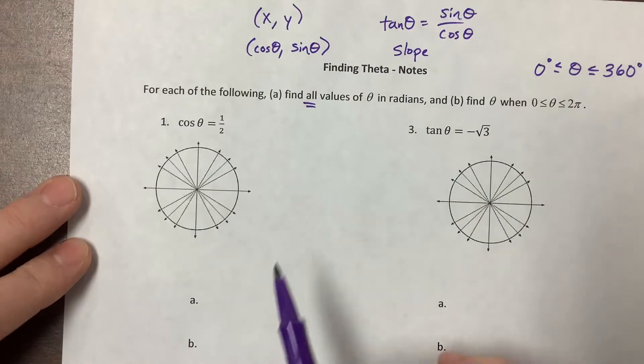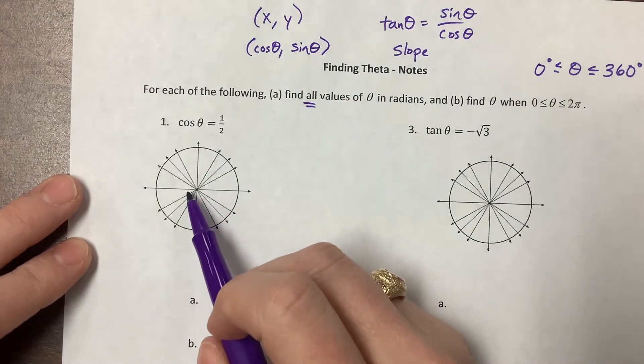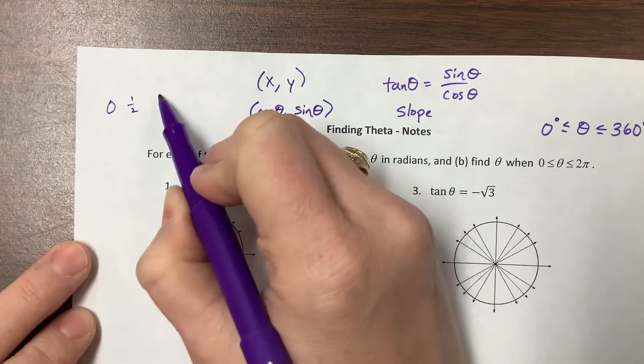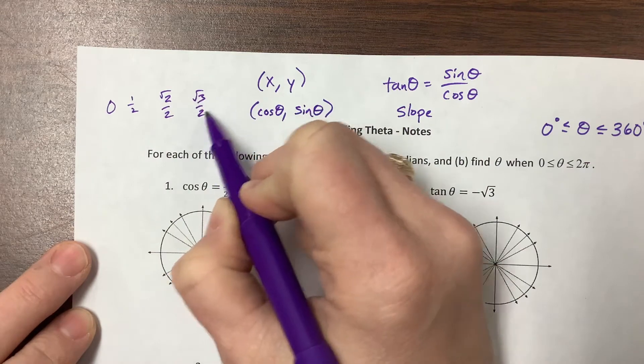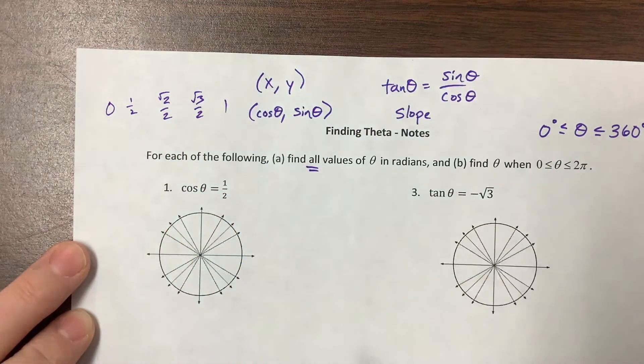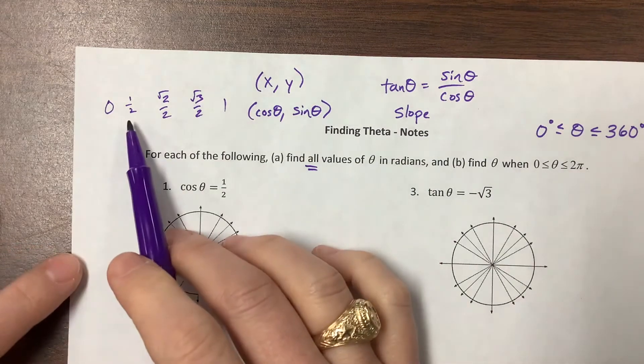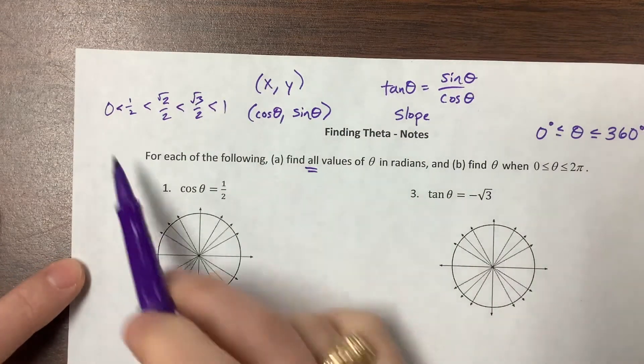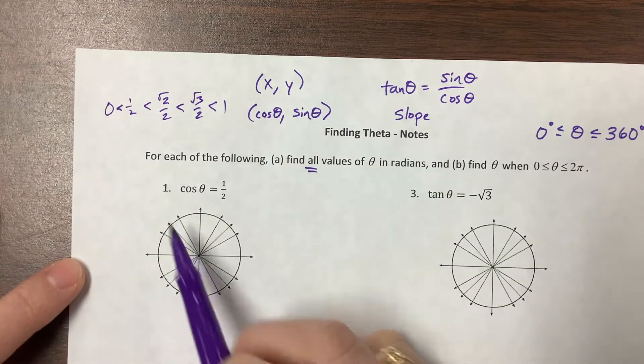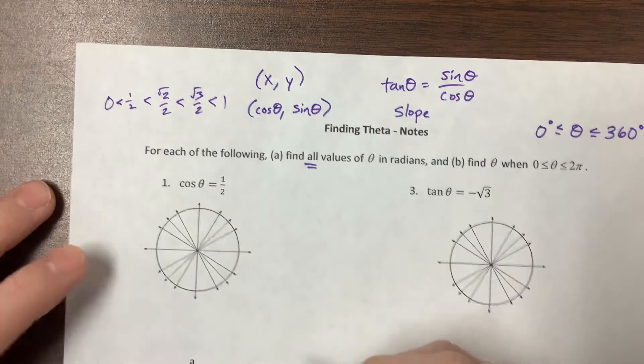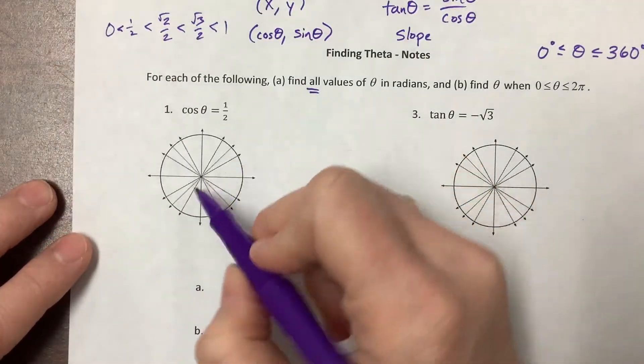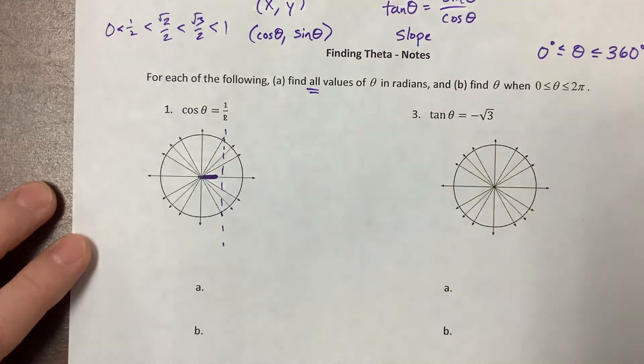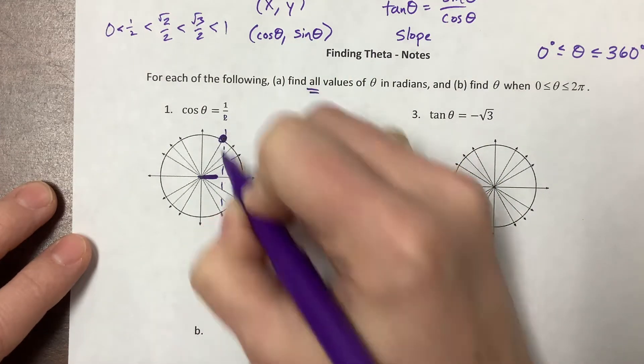So cosine, we remember to be the x value. So I want to know when is my x one-half. The numbers that I care about, it's zero, it's one-half, it's root 2 over 2, it's root 3 over 2, and it's 1, and then we can have negatives of those things. So what I notice here is that of these, I've put them in order. So one-half is going to be, well, it's not as small as zero, but it's the smallest of the other options. So cosine is my x value, and so I want to know when is x one-half. It would be one-half along this line right here. And so that happens here, and it happens here.